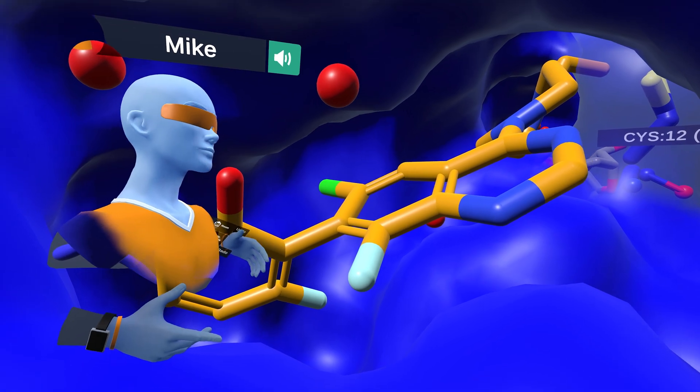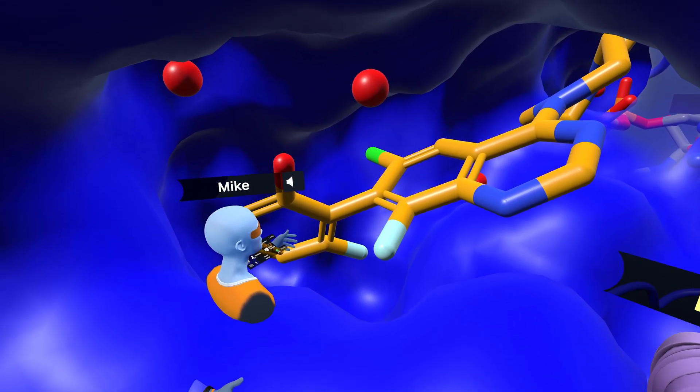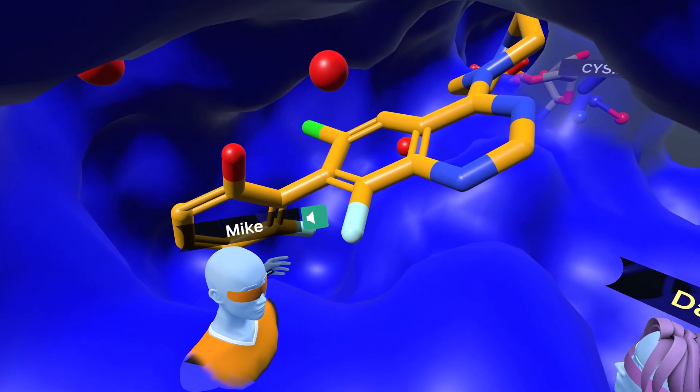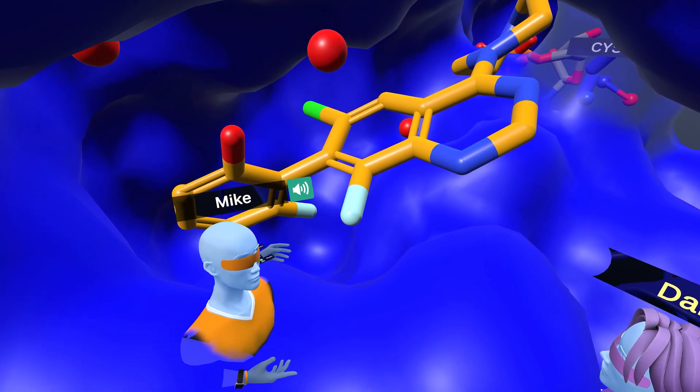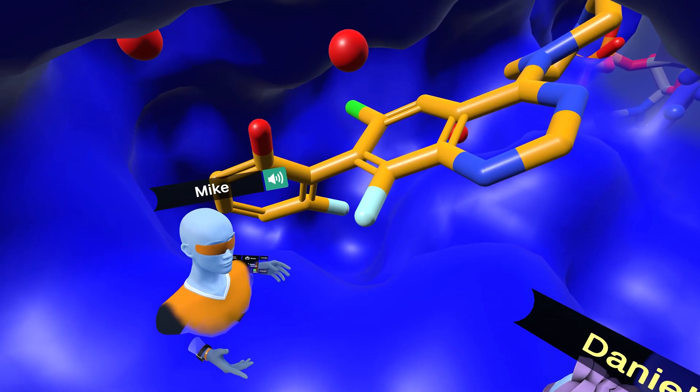So they built a library of over 7 million compounds and then looked at those, compared it to the pharmacophore of the known KRAS inhibitors, and then did docking and molecular modeling to get that down to a prioritized list and came up with some interesting new structures.